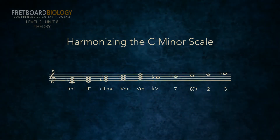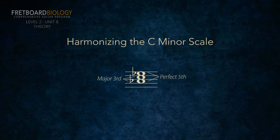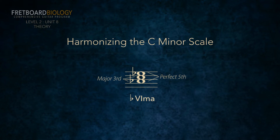Let's do the flat sixth chord. We start with the flatted sixth scale degree, which is Ab. We find a note a third above Ab from the C minor scale. That note is a C, and we call that the third of the triad. Next, we find a note a fifth above Ab from the C minor scale. That note is an Eb, and we call this the fifth of the triad. C is a major third above Ab, and Eb is a perfect fifth above Ab. A triad with a major third and a perfect fifth is a major triad. So the flat sixth chord in minor is a major triad, and we label it flat six MA.